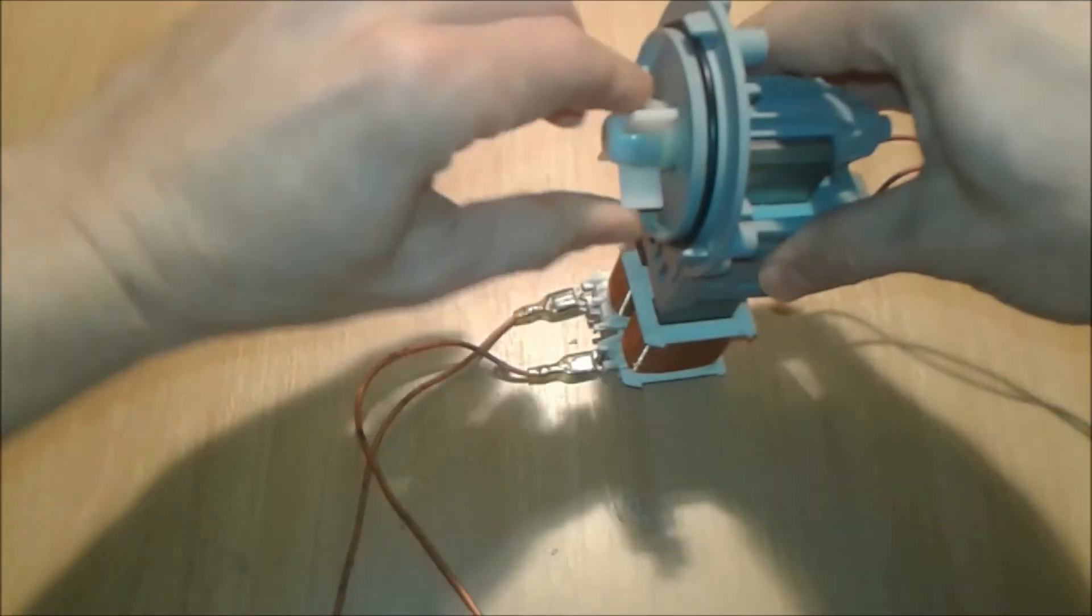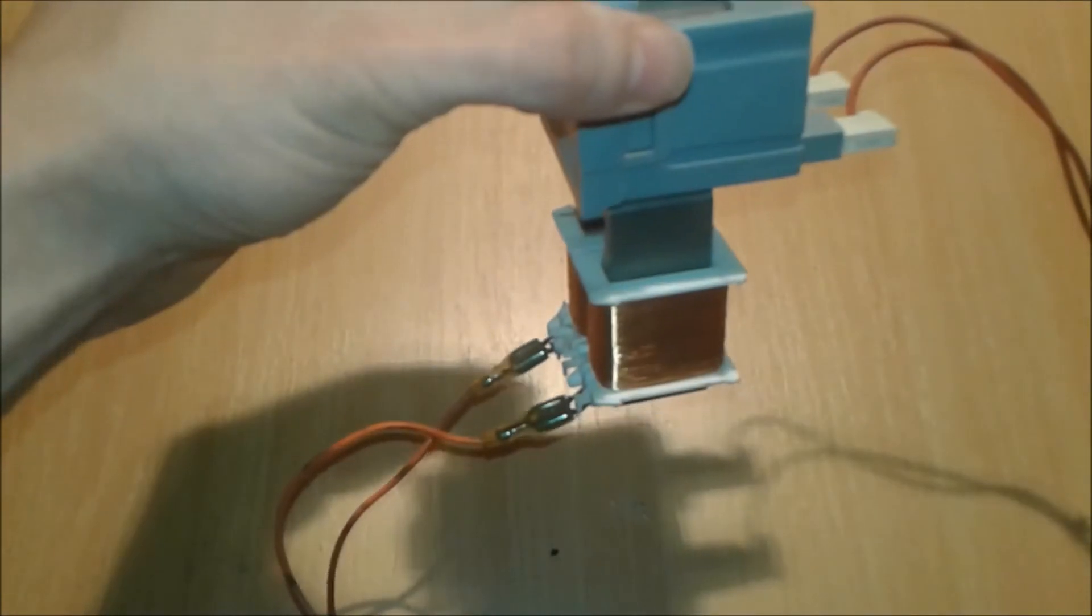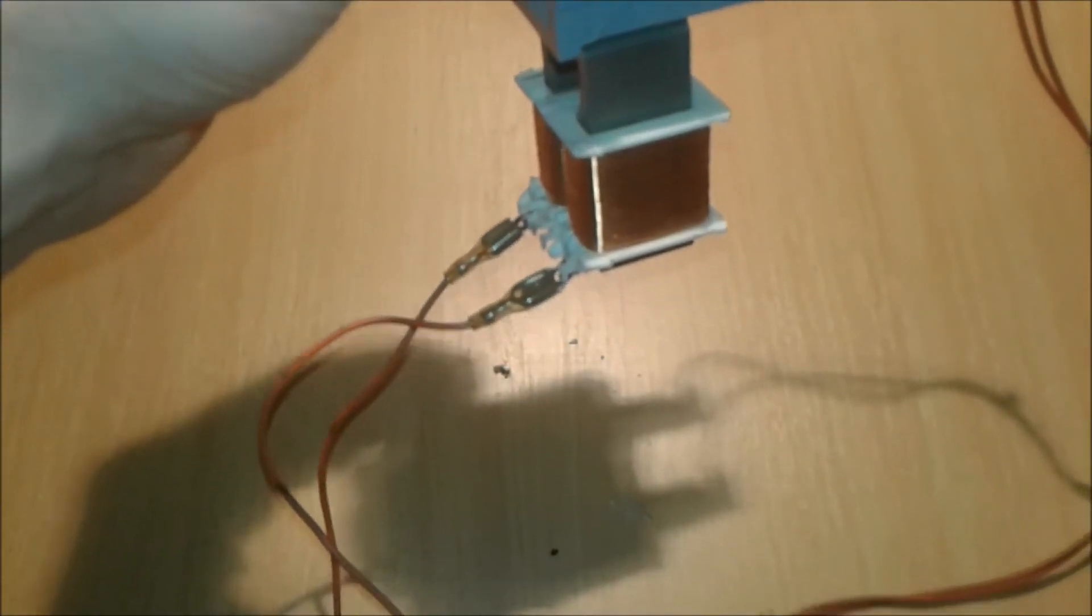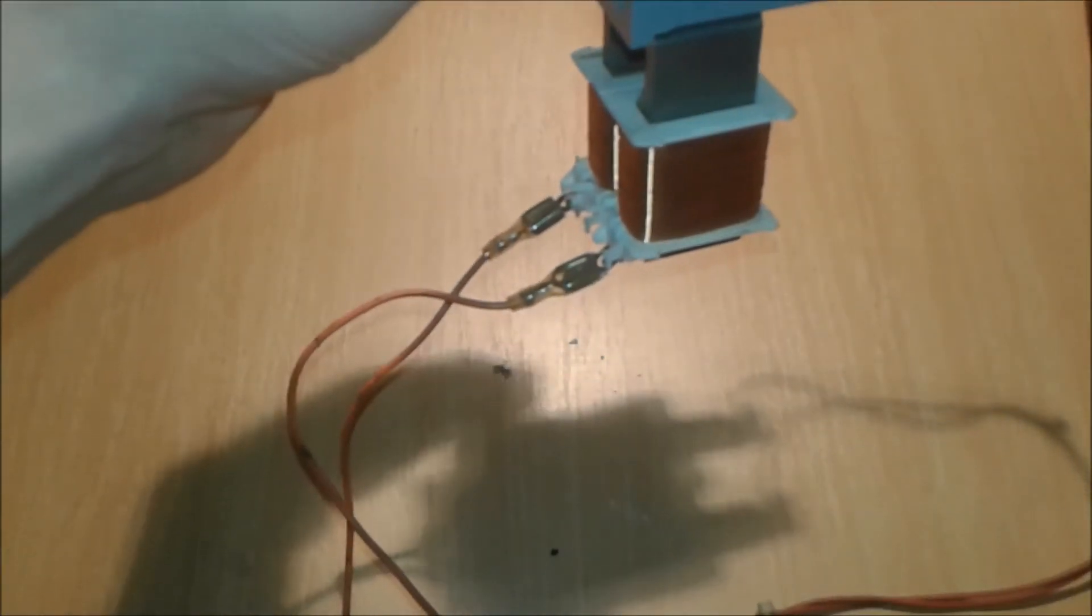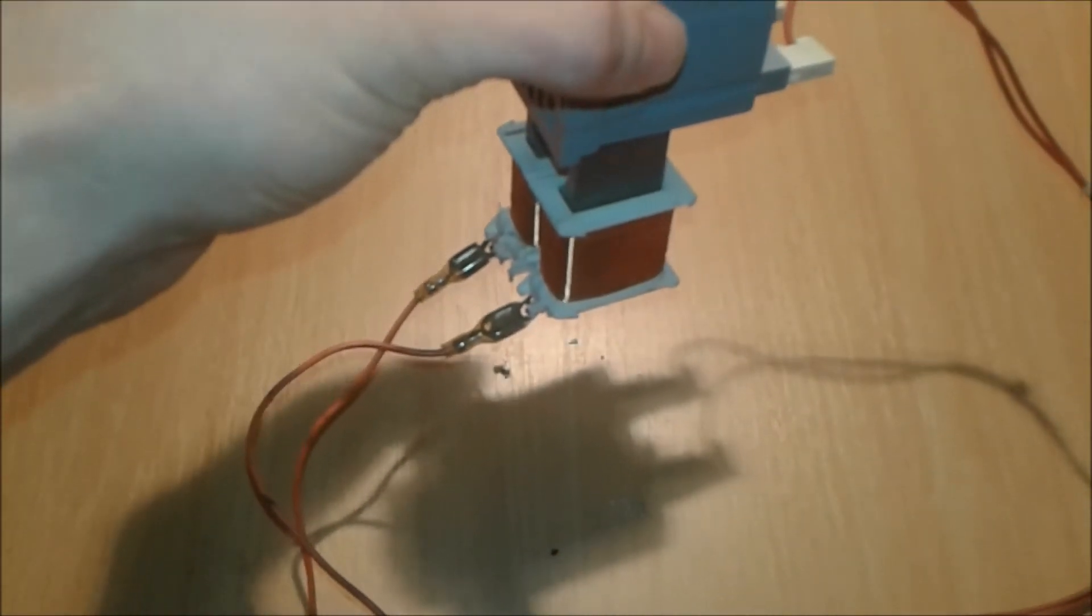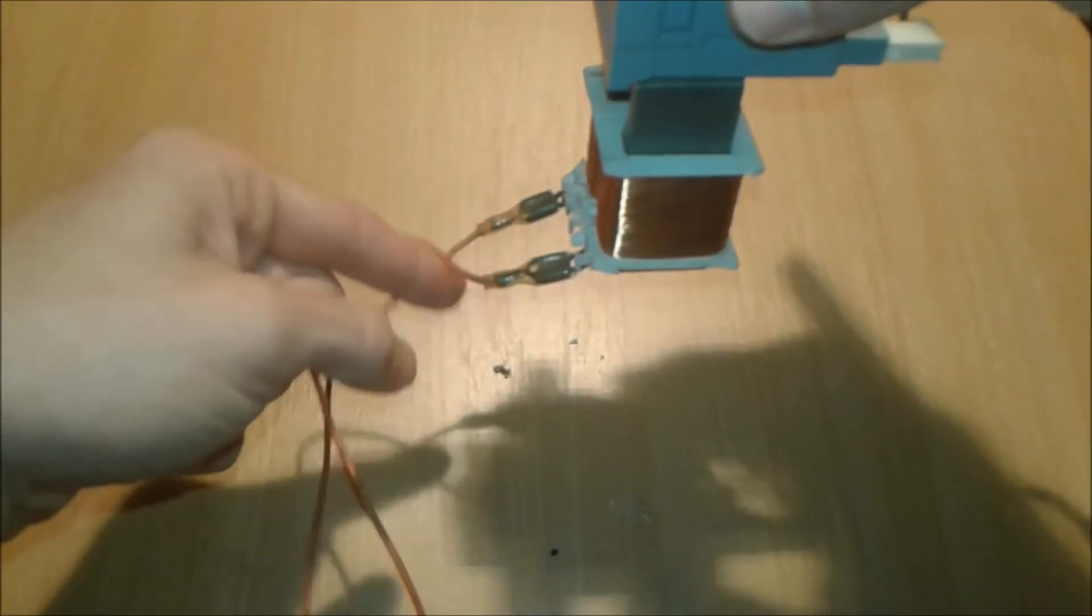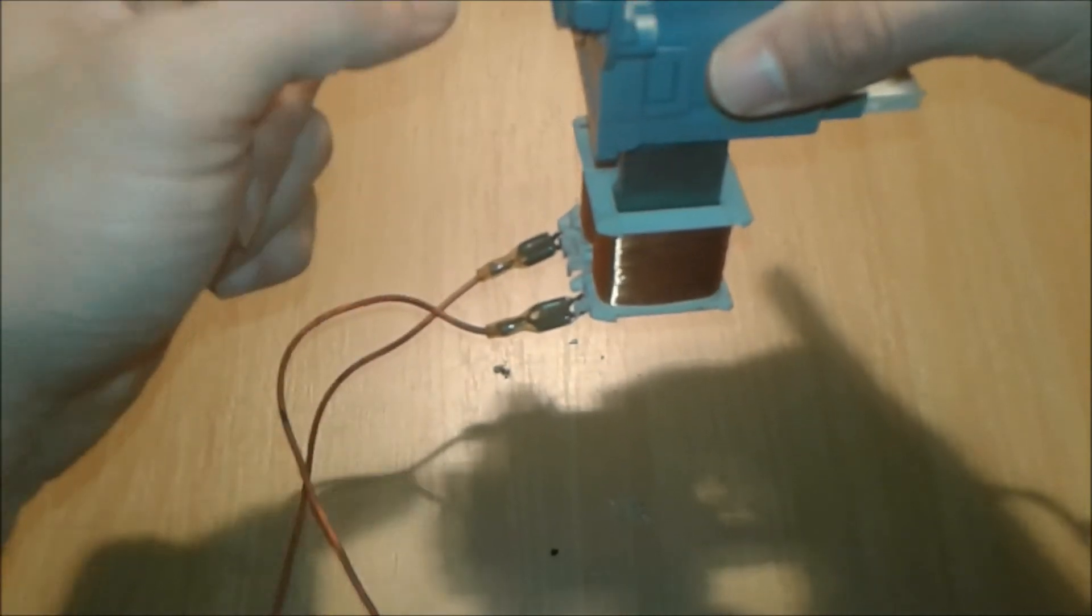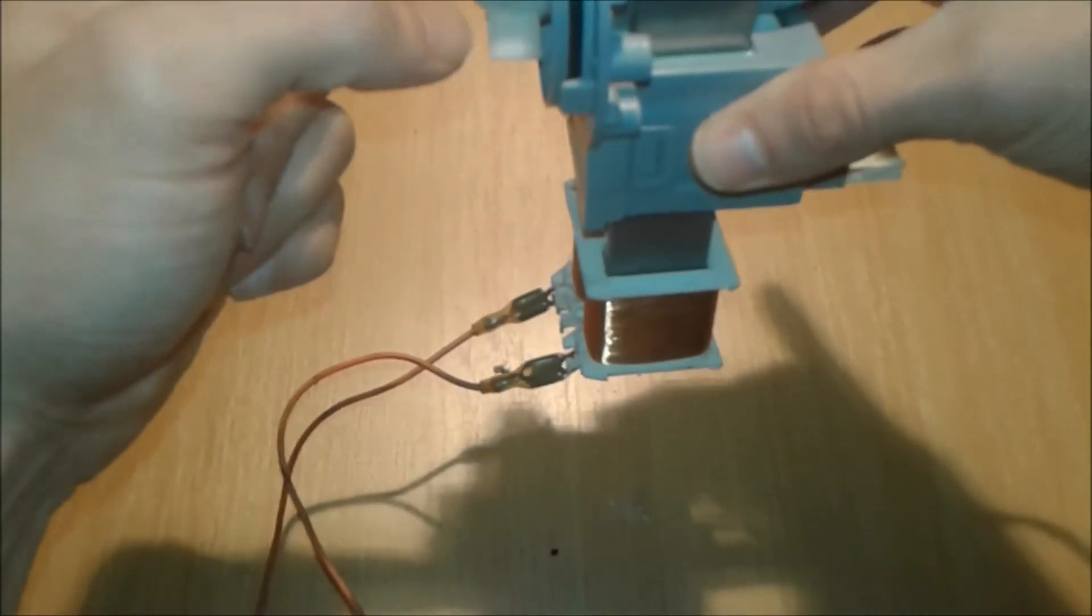So there you have it folks - how to make an electromagnet at home, very easy, very simple. You can show it to your science class, to your roommate, to your colleagues, to your friends. Pretty interesting. And now to remove the electromagnetic effect, just twist it the other way.